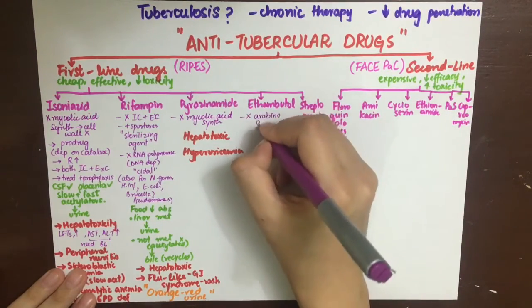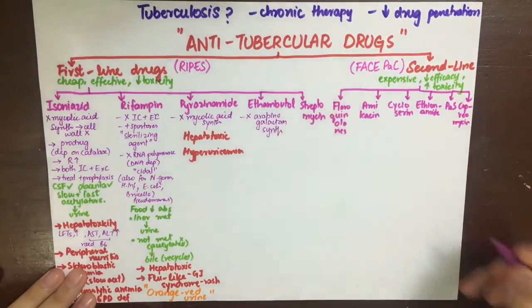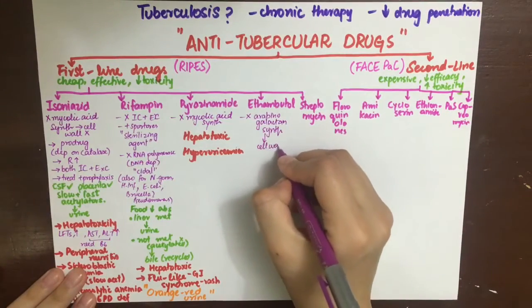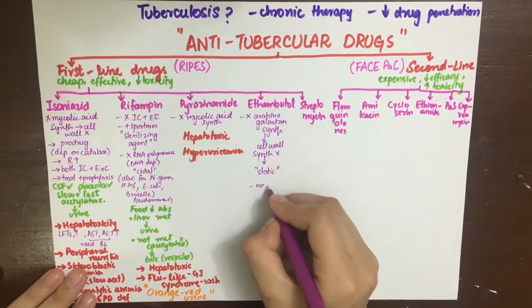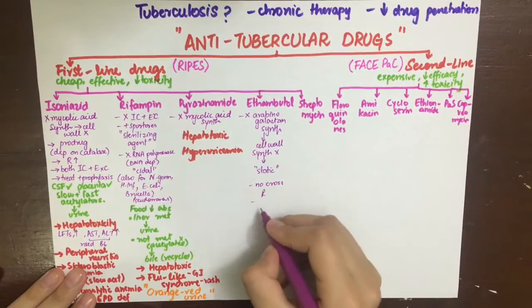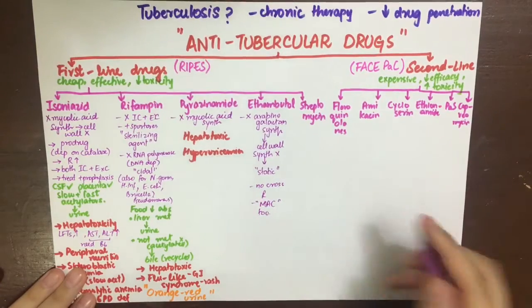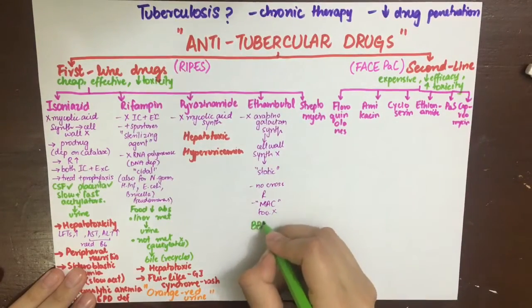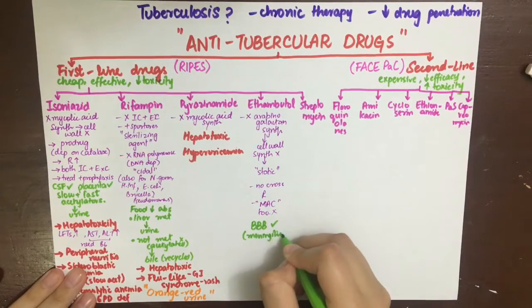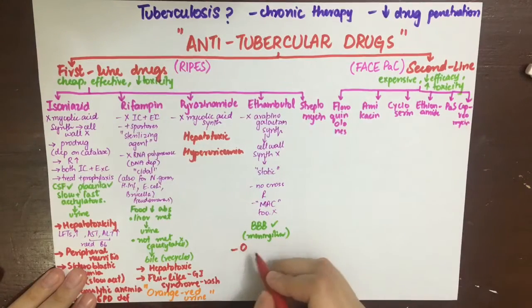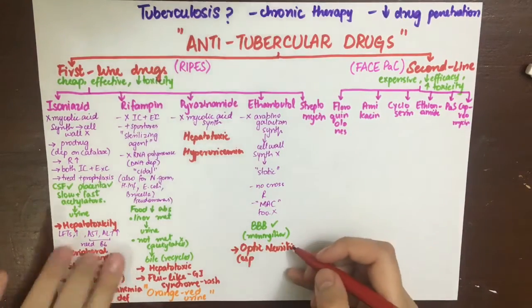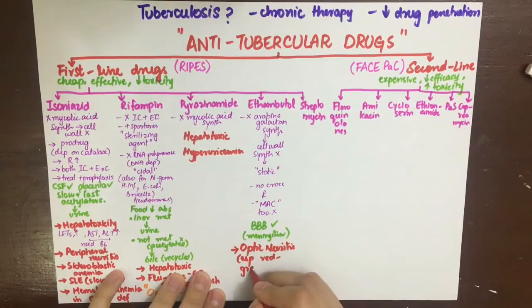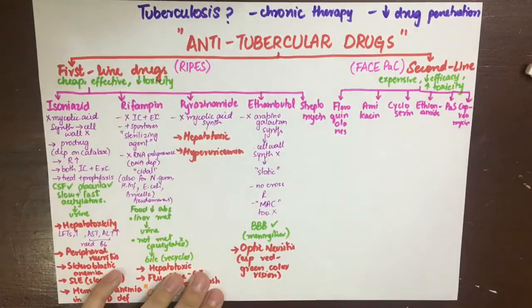Ethambutol inhibits arabinogalactan synthesis by inhibiting the enzyme arabinogalactan synthase, causing cell wall synthesis inhibition, since arabinogalactan is a major structural component of the mycobacterial cell wall. It is a bacteriostatic drug with no cross-resistance with any other anti-tubercular drug. It can be used to combat Mycobacterium avium complex, can cross the blood-brain barrier, and can be used in meningitis. Its key adverse effect is optic neuritis, especially affecting color vision — particularly red-green color vision.